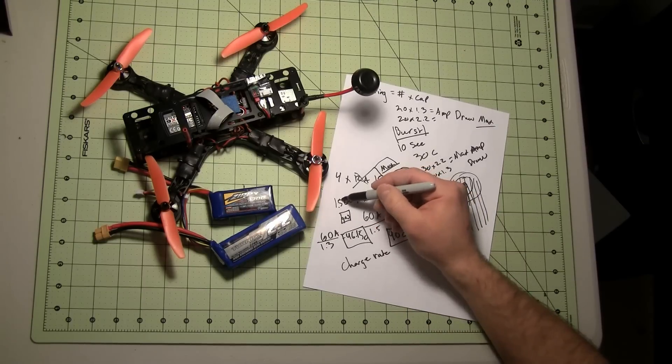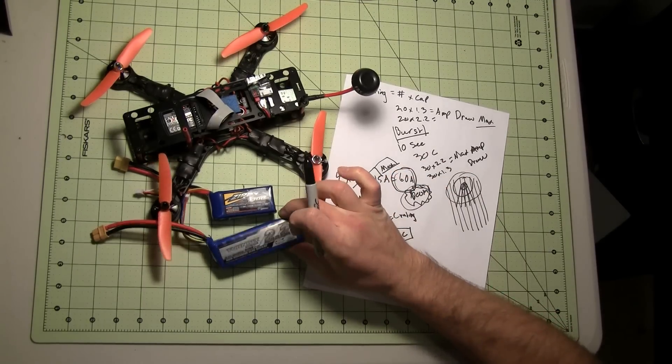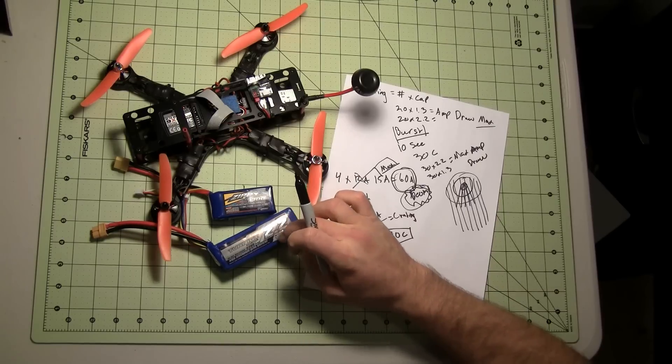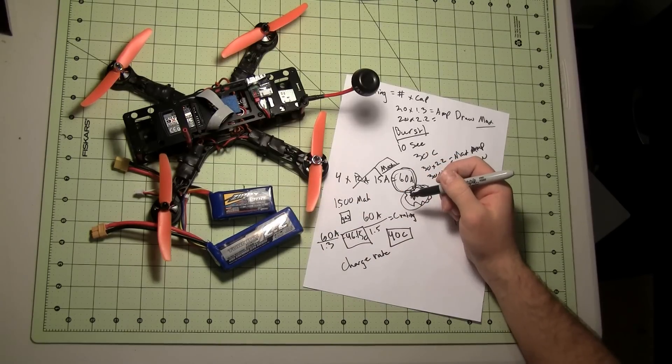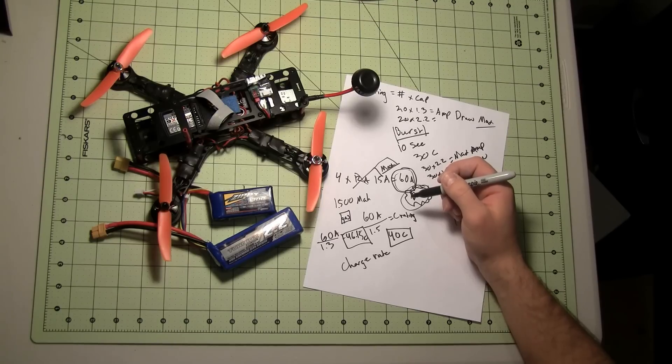That means if you have a 1500 milliamp battery, charge it at 1.5 amps. But these batteries are getting so much better that a lot of the Turnigy batteries, especially the new Nanotech ones, can do closer to 5C. So if you have a 1000 milliamp Turnigy Nanotech battery, you can charge it at 5 amps safely.